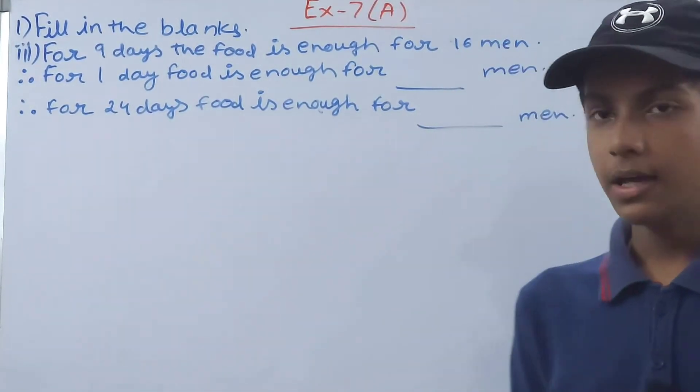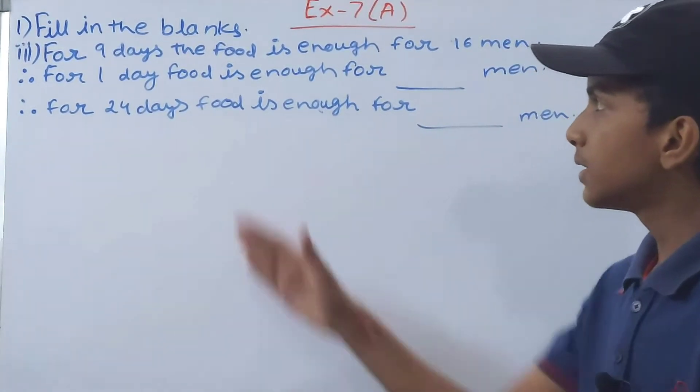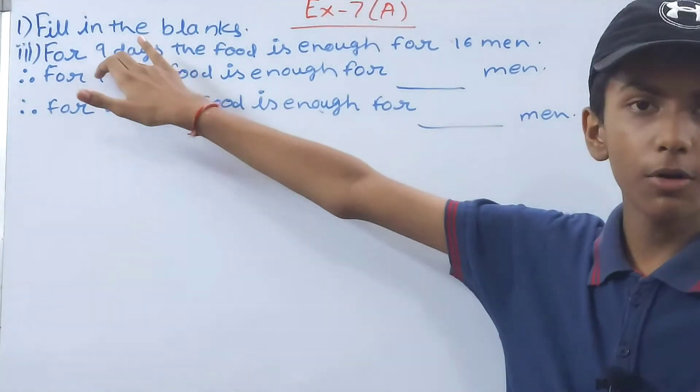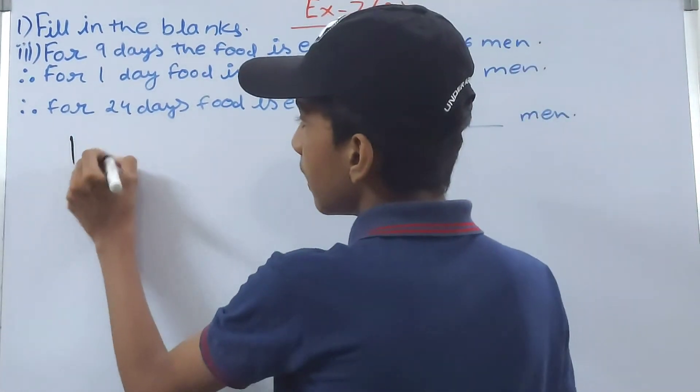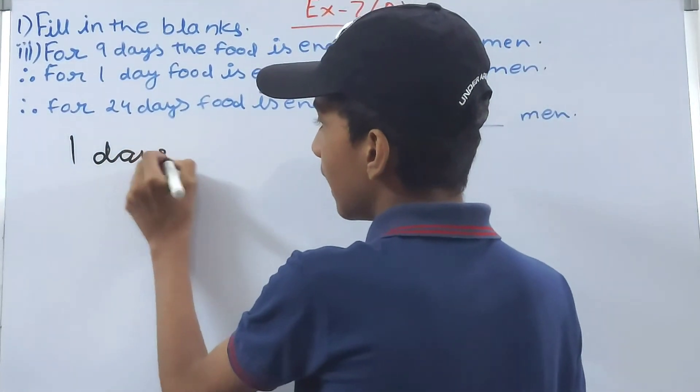See, if the food is less, the number of days is less. From 9 we reduce this to 1. So 1 day will have food for how many people? See, 16 into 9. Simply we will multiply them because this is a question of indirect variation.